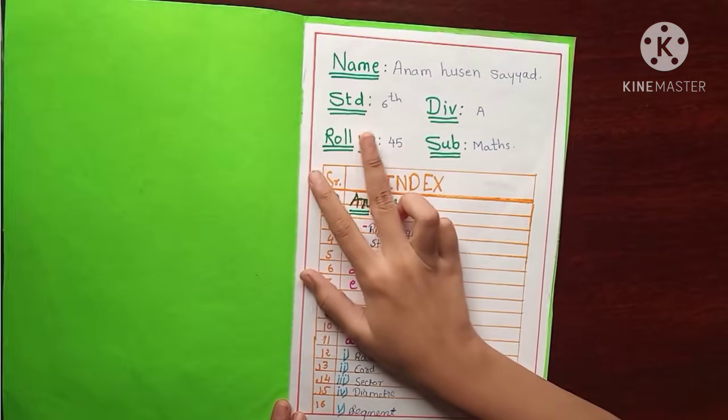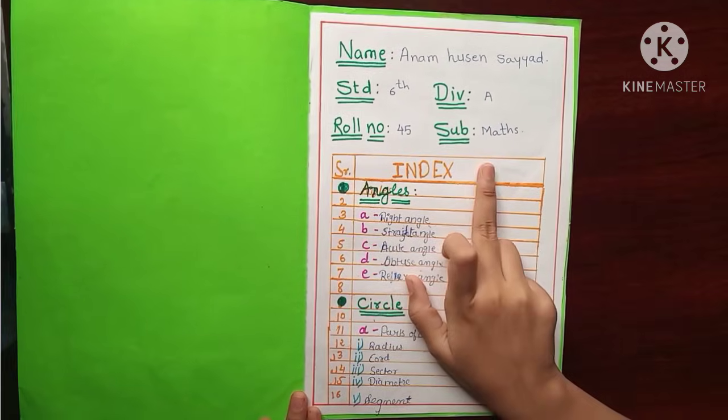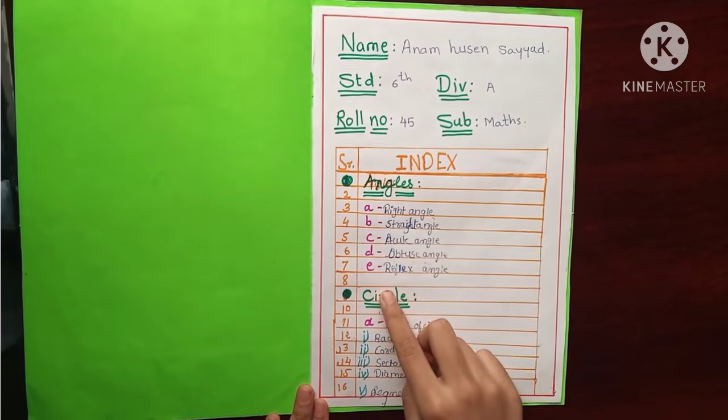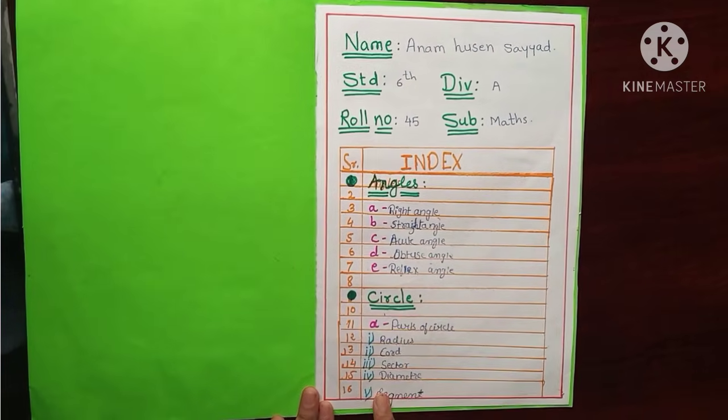Here is name, standard, division, role number and subject. And this is index. Angles and here are the types of angles, circles, parts of circle.